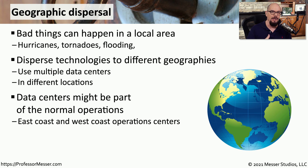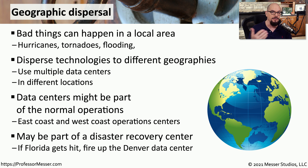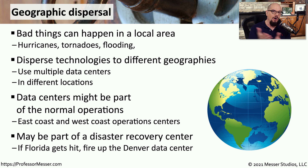This might be part of a normal operation you have. There might be a data center on the East Coast and a data center on the West Coast, and if anything happens on either one of those coasts, everybody can start to use the other data center to maintain the uptime. This might be part of the normal disaster recovery process — you might have a data center in Florida and one in Denver, and if there is a hurricane in Florida, all of the processes can now be running from Denver.